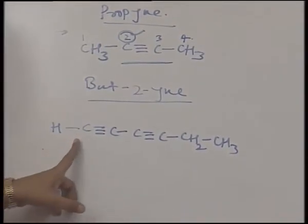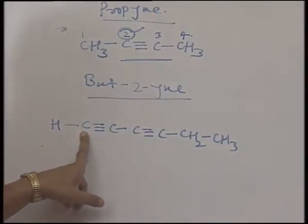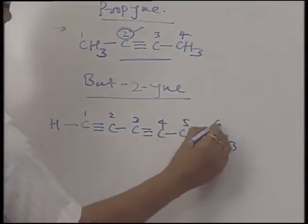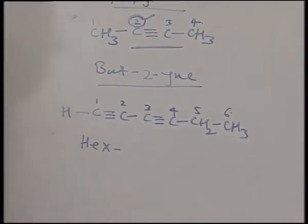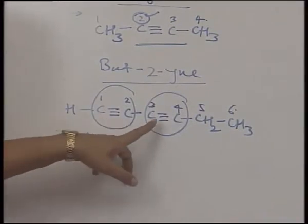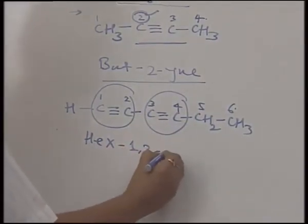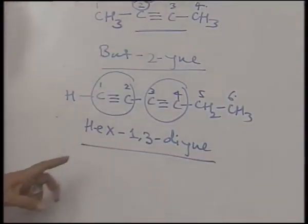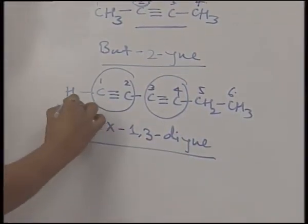Now suppose a compound contains two triple bonds. As per the IUPAC rule, we have to start the numbering from the left side because that gives the least numbers to the triple bonds. So we number 1, 2, 3, 4, 5, and 6. As it has 6 carbon atoms, the word root is hex. There are two alkyne groups at positions 1-2 and 3-4. We write 1, 3, di, and YNE. The correct IUPAC name is hex-1,3-diyne.